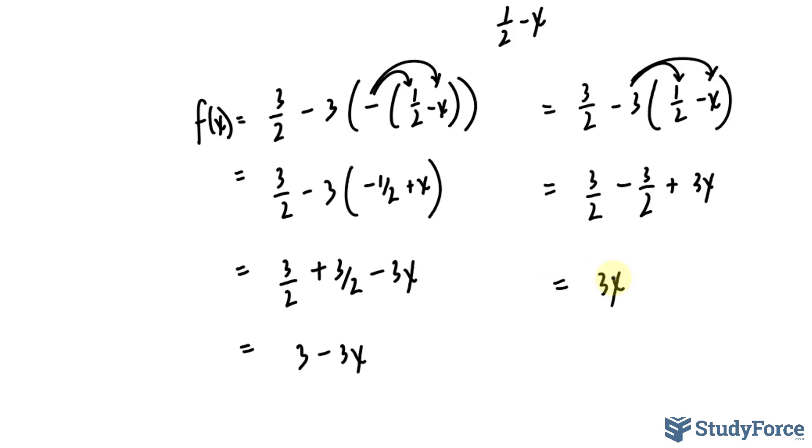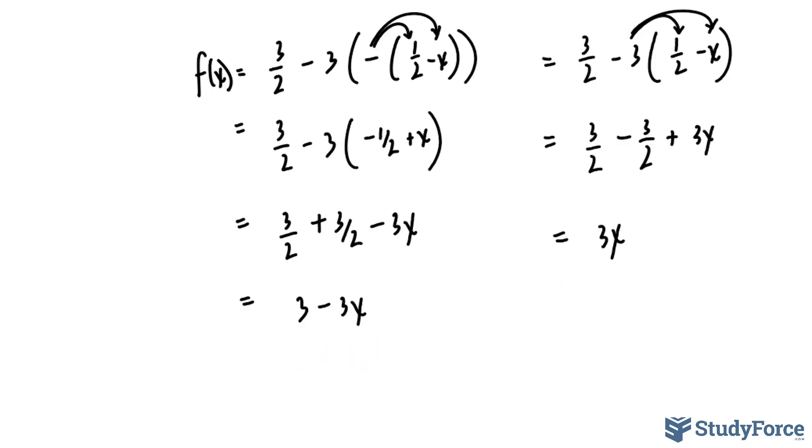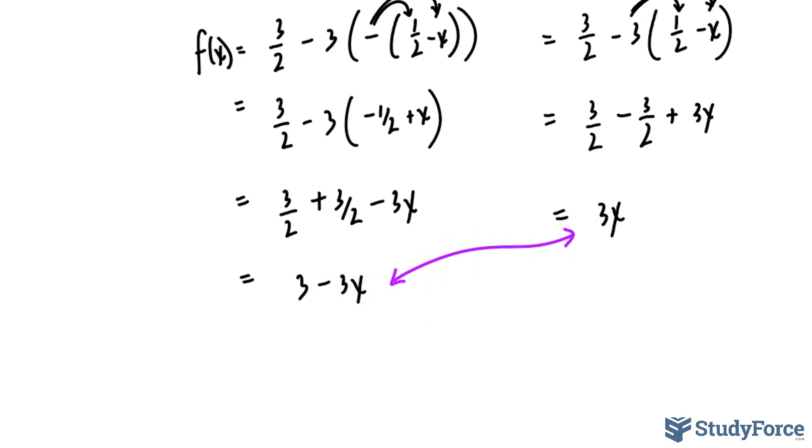Now, the reason why I'm doing this is so that I can find the point of intersection between this linear equation and that linear equation. The point of intersection will enable us to create the boundaries in our piecewise function, our restrictions. So, to find the point of intersection between these two, we simply set them equal to each other.